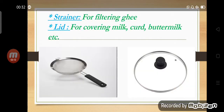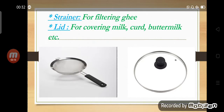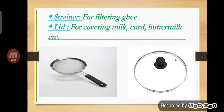Our next object is a strainer. Strainers are used for filtering ghee. The next object is a lid. If you want to cover the vessel, we use lids — for example, to cover the vessel containing milk, curd, buttermilk, etc.